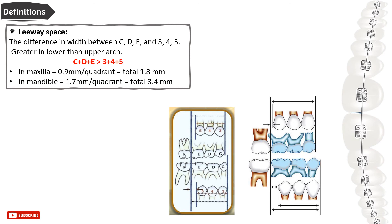The leeway space is the difference in total widths between C, D, E and 3, 4, and 5. The total width of C, D, and E is greater than that of 3, 4, and 5. After the eruption of the permanent canine and premolars, a space is created between the 5 and the 6, which closes spontaneously due to the mesial shift of permanent molars. The leeway space is greater in the lower than the upper arch: in the maxilla it is 0.9 mm per quadrant (1.8 mm total), and in the mandible it is 1.7 mm per quadrant (3.4 mm total).